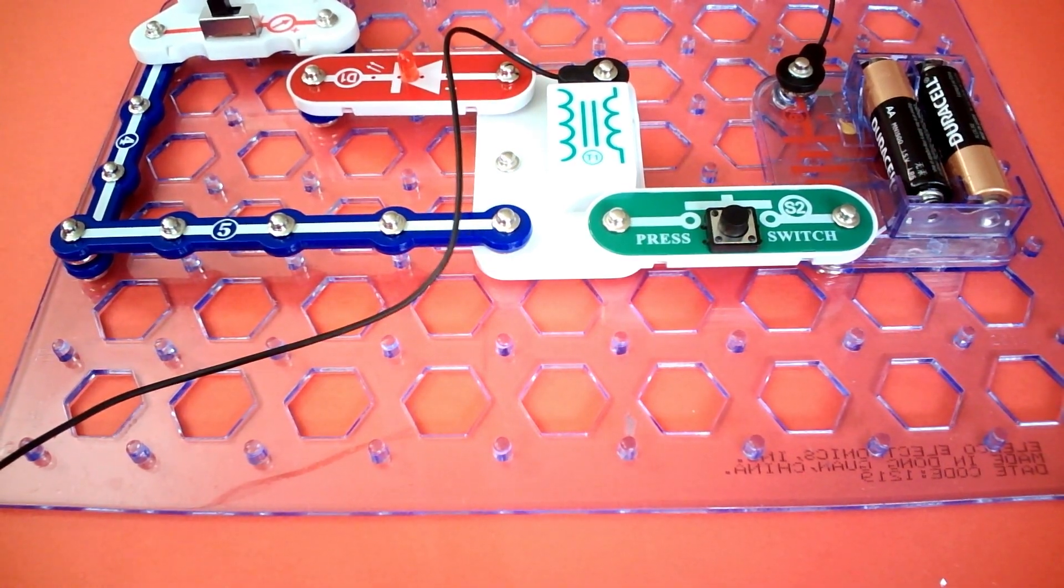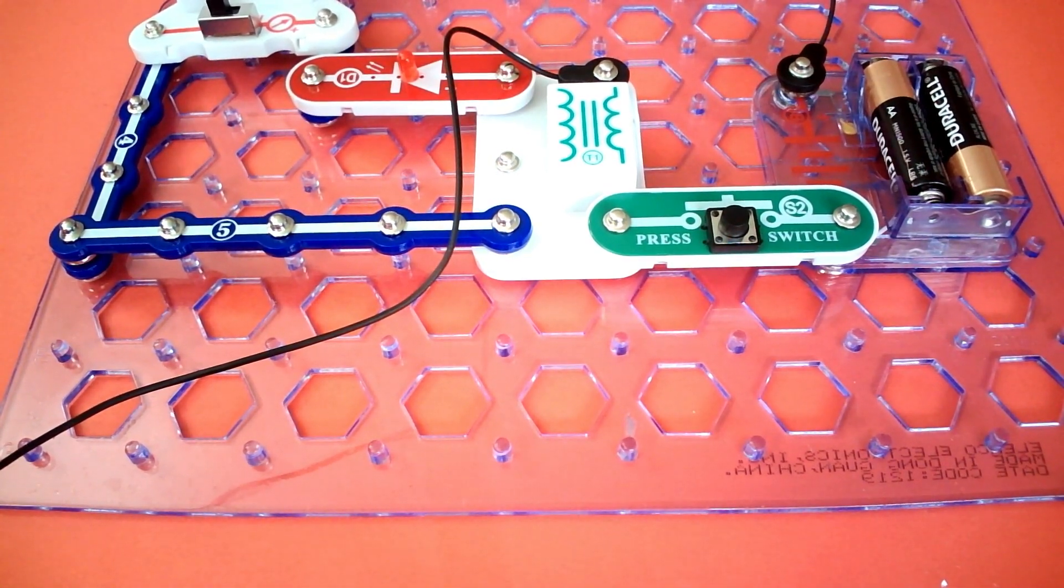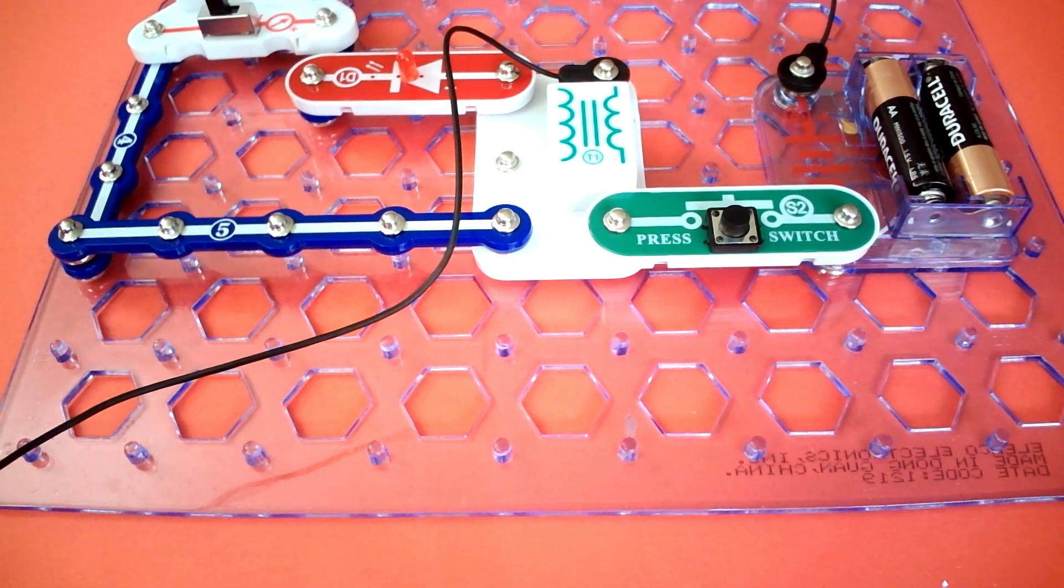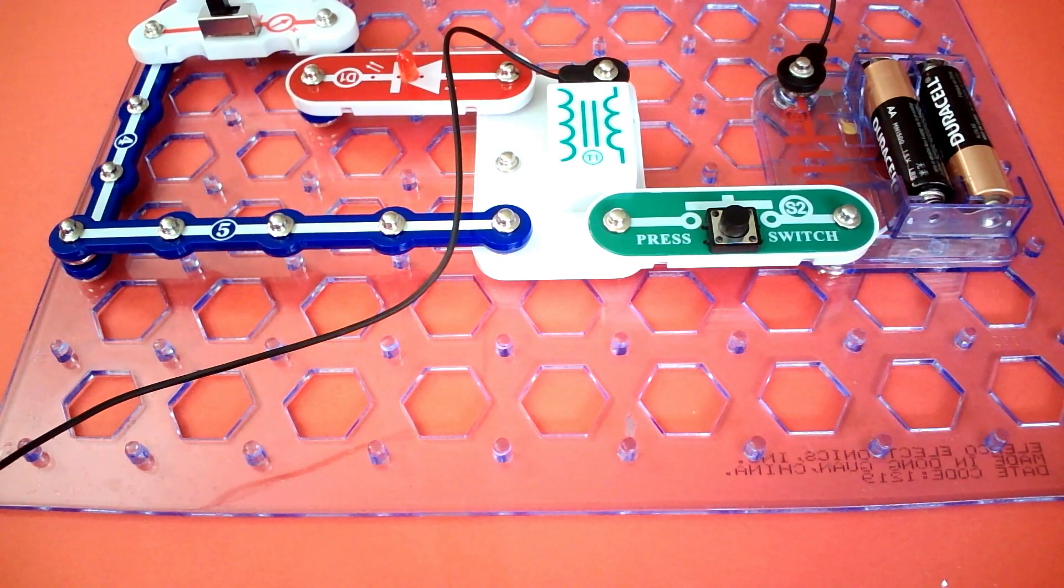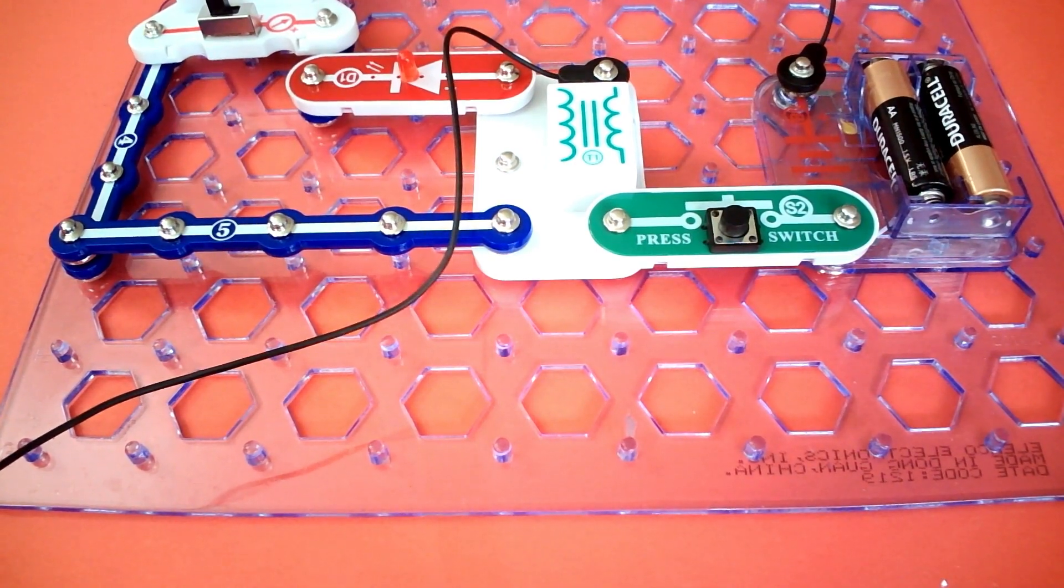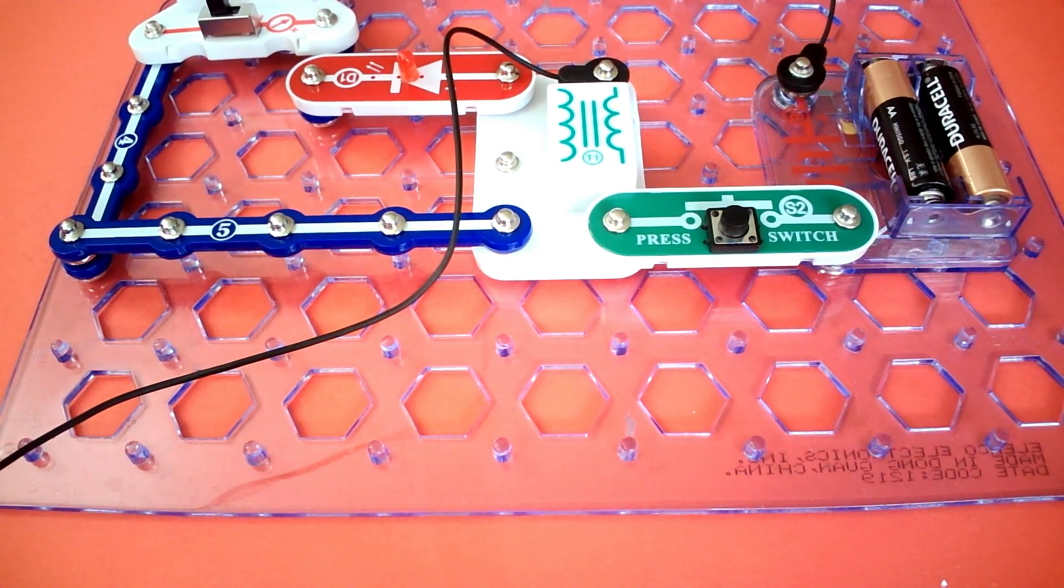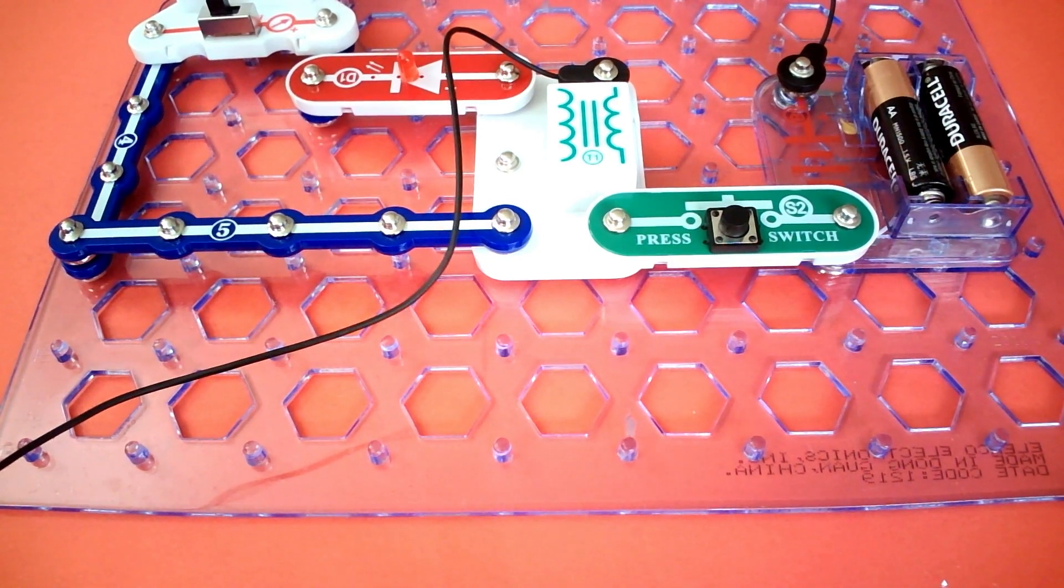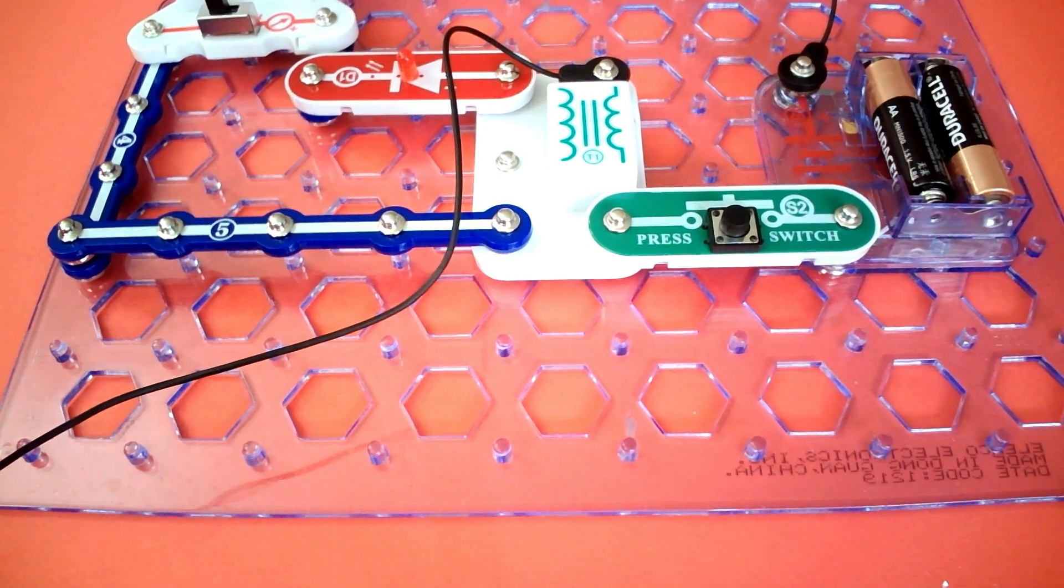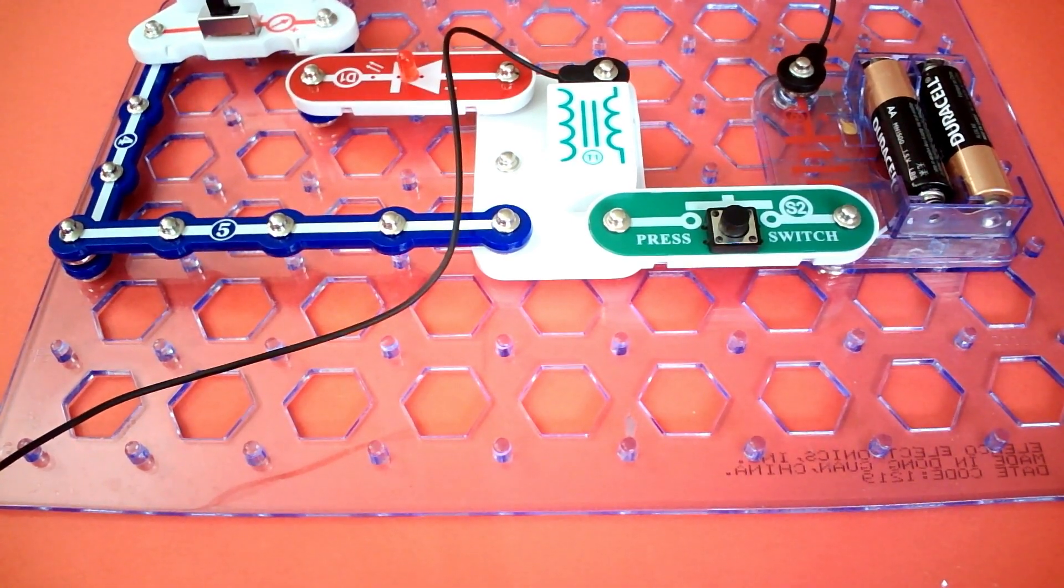That's how to convert AC to DC current using project number 359 in Snap Circuits Pro third book. The project's called AC to DC Current. That's how to convert AC to DC current in this channel, Little Circuits. I'll see you next time. Bye.